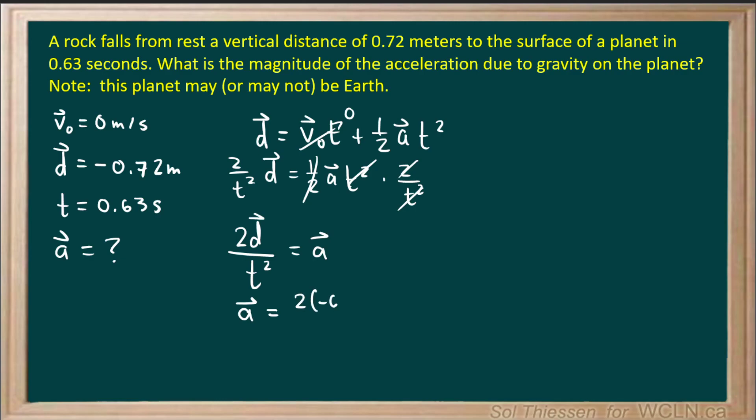So the displacement is negative 0.72 meters. That'll be divided by 0.63 seconds squared, giving us units of meters per second squared, which makes sense for acceleration. So we're all good there.